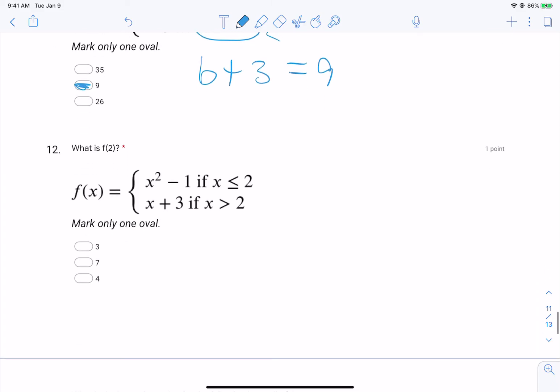Now number 12, since it's right on the border, this is the only one that says where it's equal to 2, so f of 2 would be 2 squared minus 1, 4, 3.